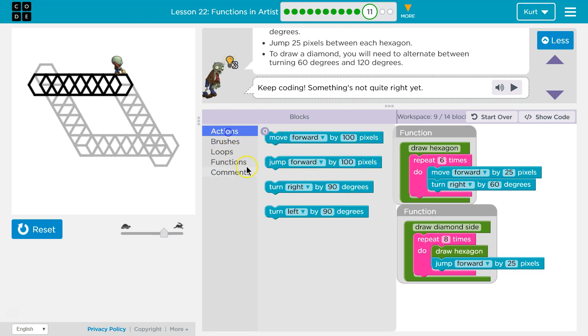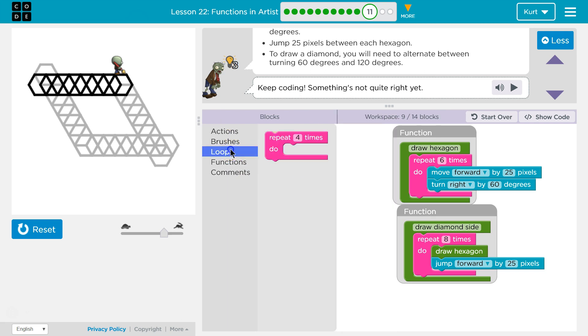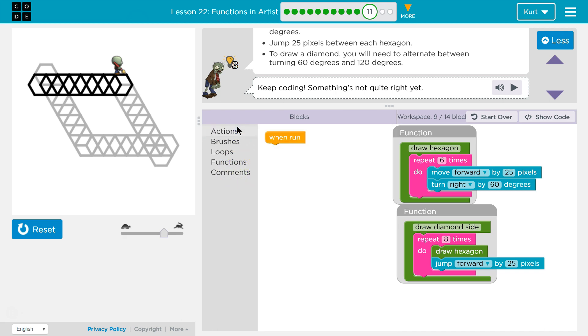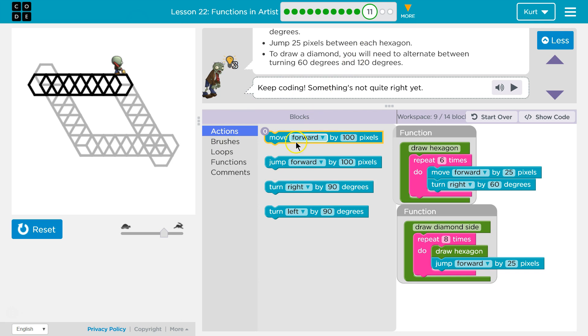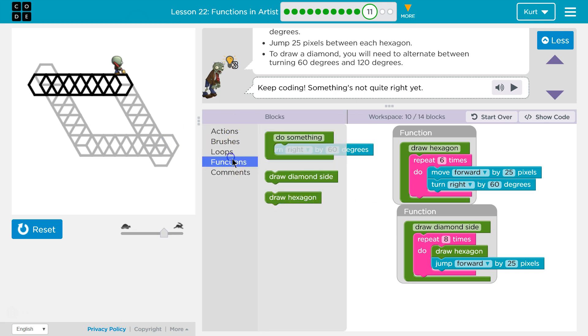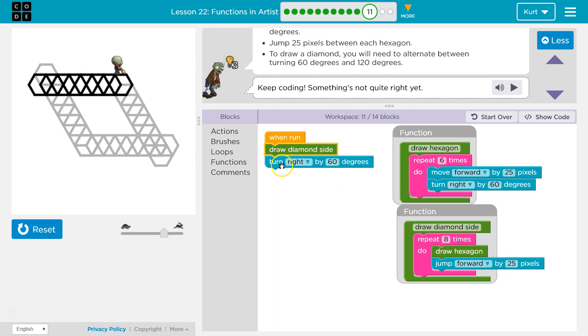Well there's four sides. Oh wait a minute though. Because there's different turns like last time. Let's do turn 60. Turn 60 degrees. Well first, function draw a diamond side, turn 60. Then what?